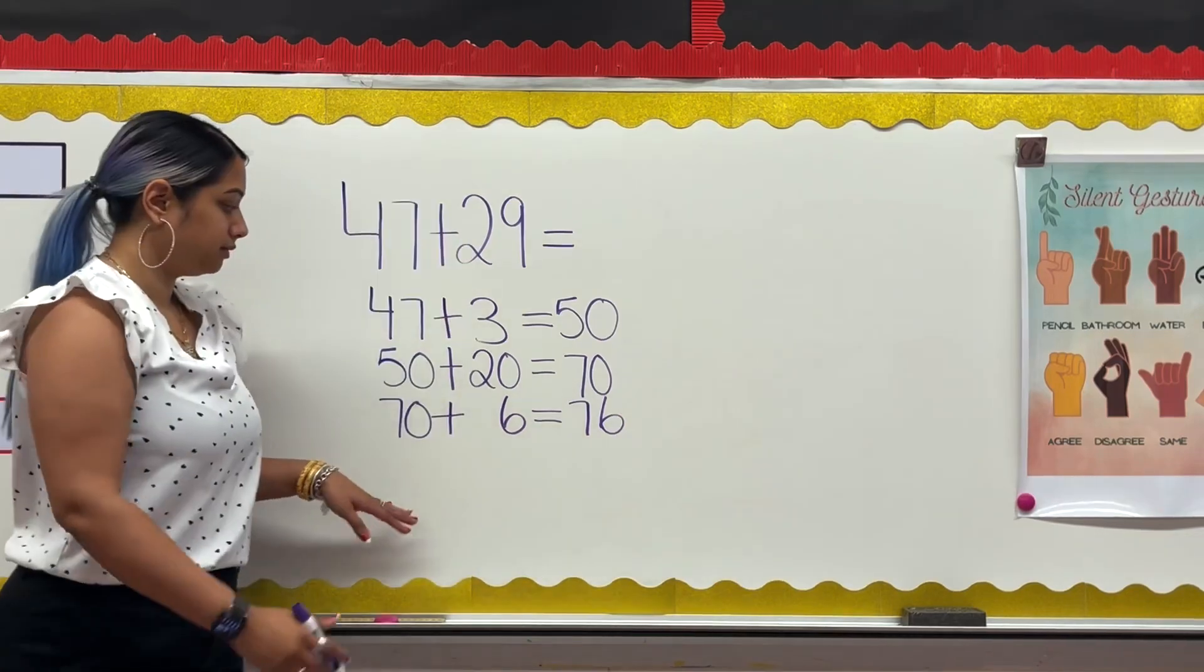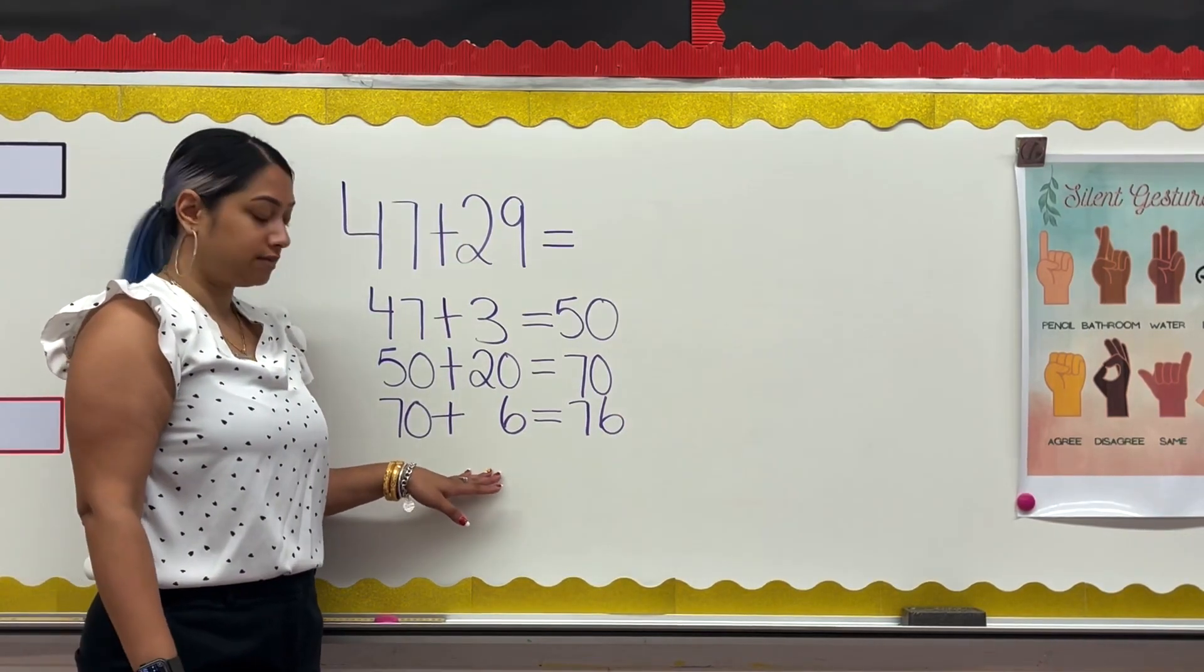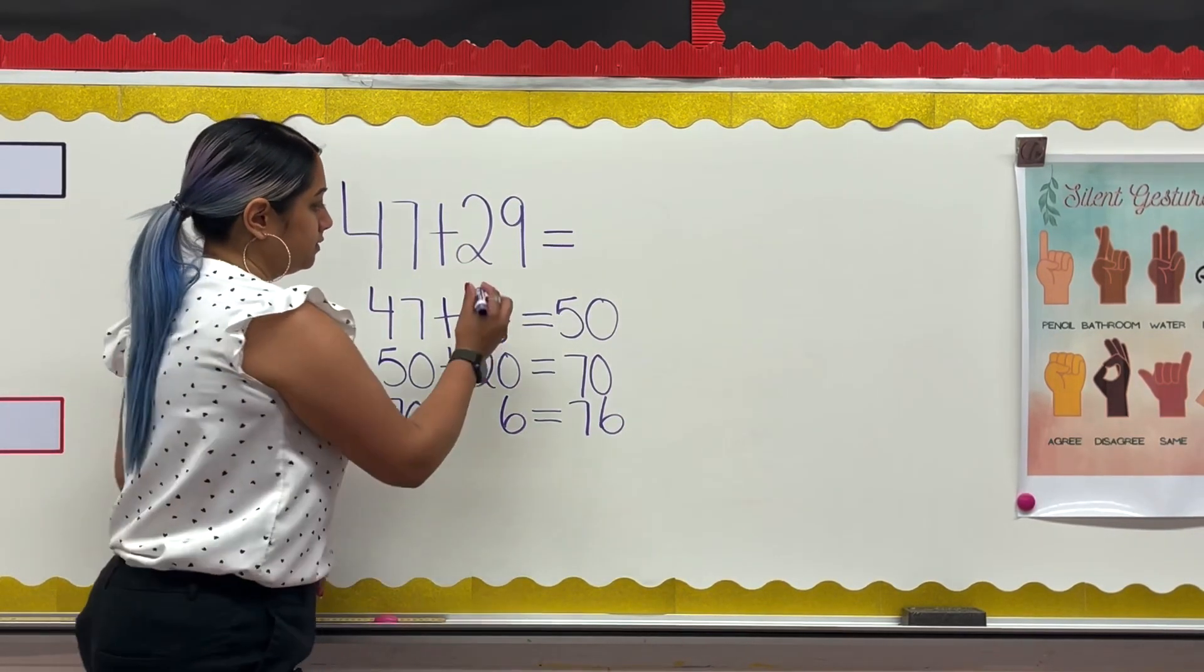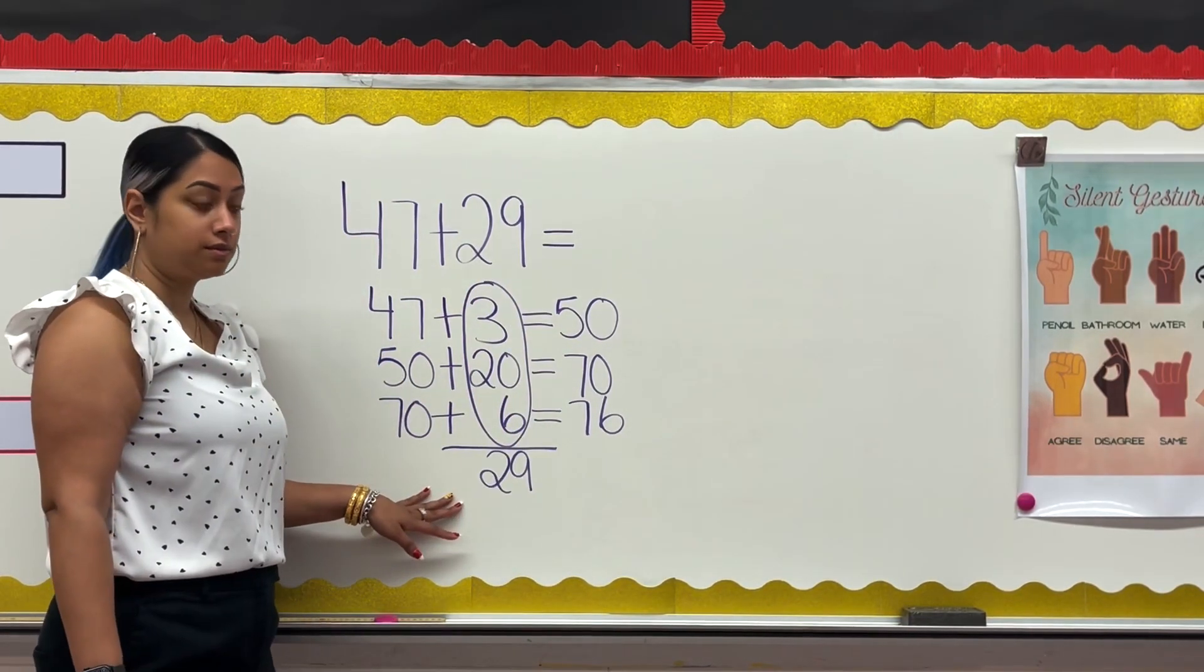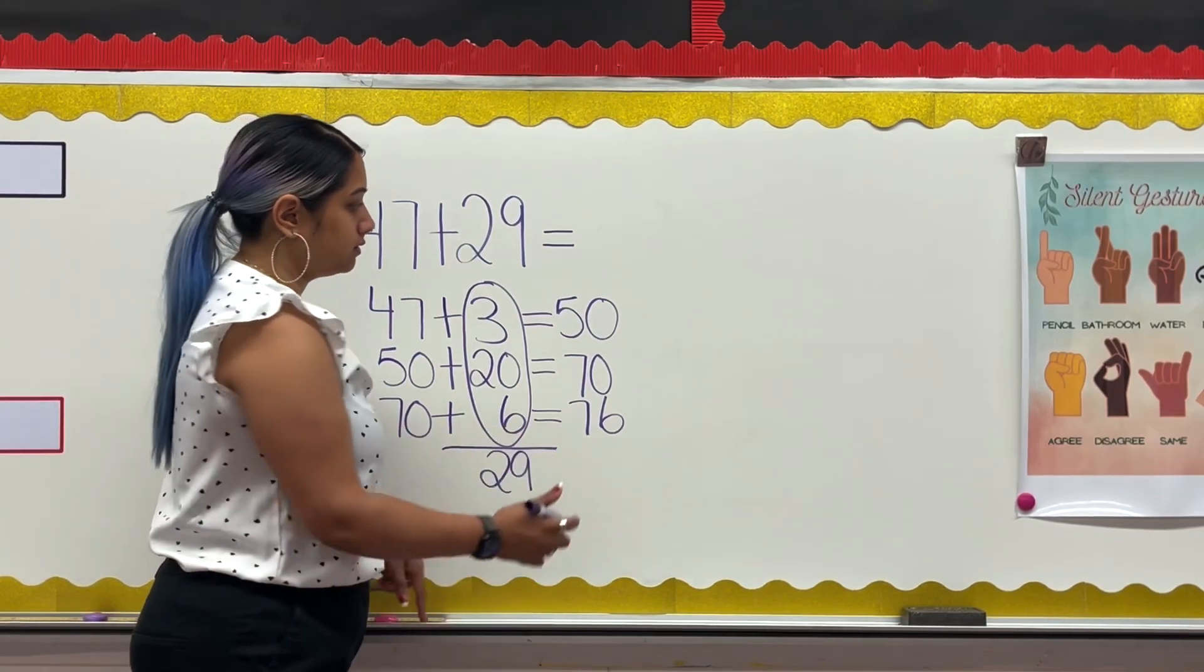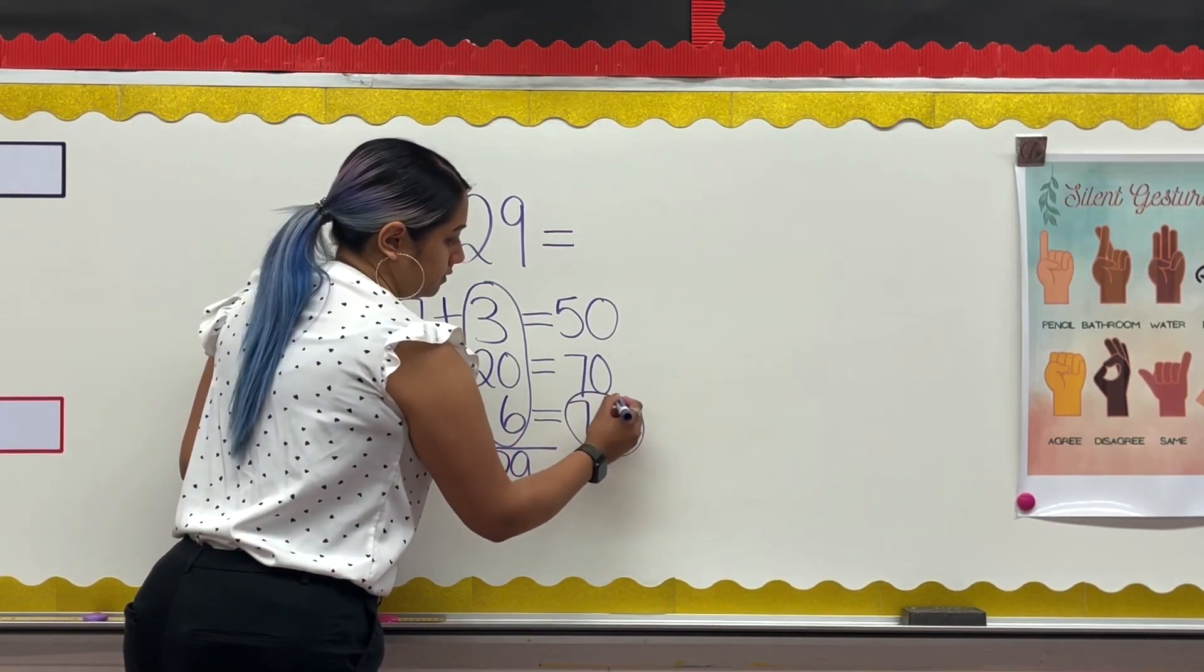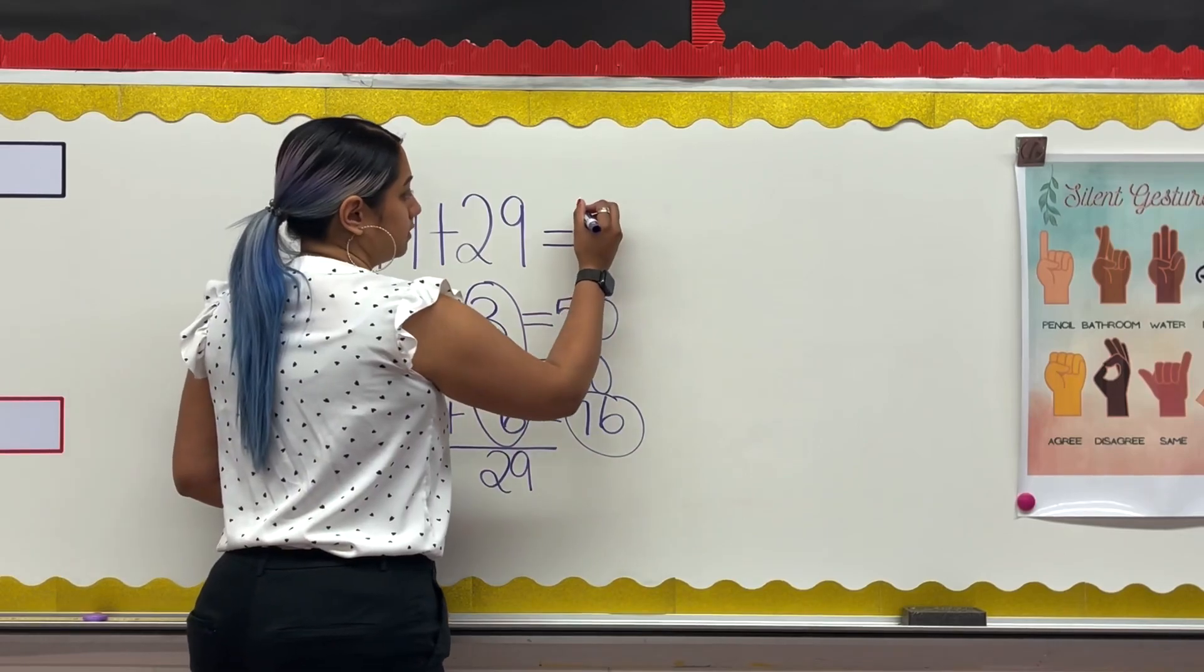Adding by friendly numbers made this easy. If I add 3, 20, and 6, I get 29, which means my answer is correct because it brings me back to my second addend of 29.